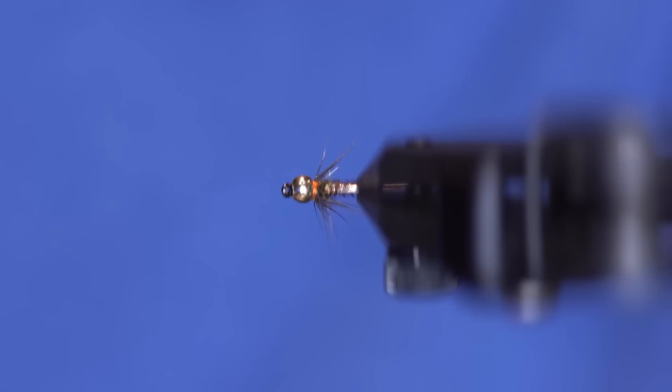But anyway, that's pretty simple. Put whatever head cement you want on there. Just be careful not to get it into that hen because it will mat it down and you want it to be able to move freely. So there you go, pheasant tail soft hackle and it fishes.